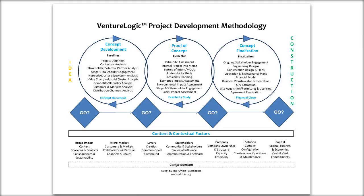Now let's look at the content and contextual factors. We have basically seven categories and in total 21 dimensions that you look at when talking about the content and context of your project. First we have 'broad impact' — these are issues and variables that permeate the entire project life cycle and are embedded into many different areas of the project. The first dimension is 'context,' which refers to the environment in which the project is being developed and will operate, covering a multitude of factors that may directly or indirectly impact the project.